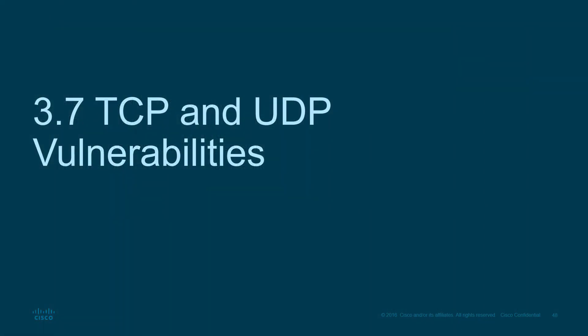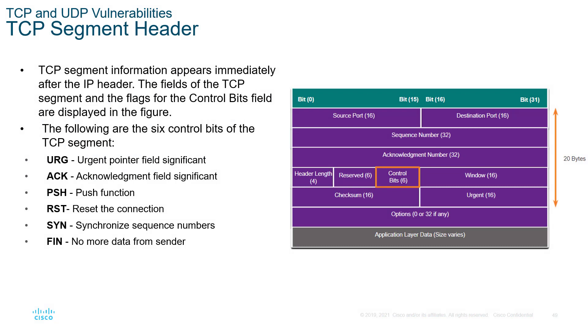The next main section is TCP and UDP vulnerabilities. TCP and UDP are the layer 4 segments and they have their own headers. Looking at a TCP header, the presence of sequence number and acknowledgement number immediately identifies it as TCP, because UDP does not have either of those. Looking at the control bits: URG, ACK, PSH, RST, SYN, or FIN — all controlled in the control bits section.